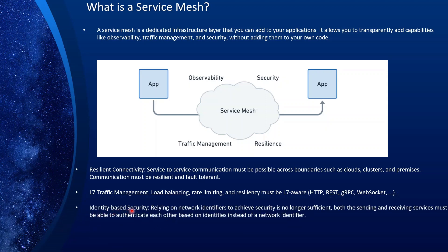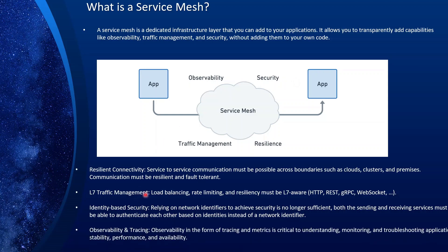Identity-based security: application A must be able to verify that it is who it is claiming to be. That is another feature that the service mesh provides. Observability and tracing: observability in terms of tracing and metrics is critical to understanding, monitoring, and troubleshooting applications' stability, performance, and availability.